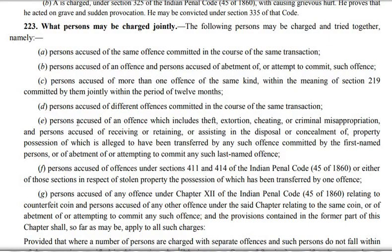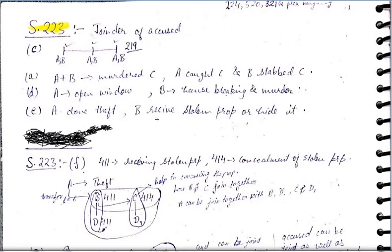Clause E: persons accused of an offense which includes theft, extortion, cheating or criminal misappropriation, and persons accused of receiving or retaining or assisting in the disposal or concealment of property — the possession of which is alleged to have been transferred by any such offense committed by the first-named persons — or of abatment, or of attempting to commit any such last-named offense. So they can be tried together.